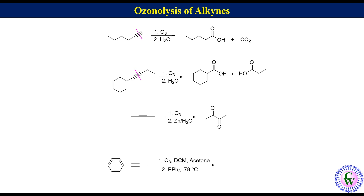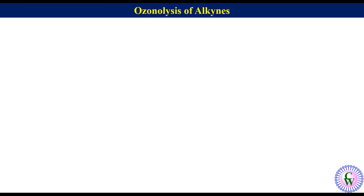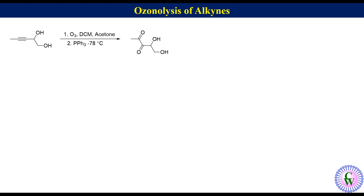Another example also involving reductive workup, since triphenylphosphine has been used. To get the product structure, convert the triple bond to a single bond to get the skeleton, and then connect the alkyne carbons with oxygen atoms through double bonds. Thus the product is 1-phenylpropane-1,2-dione. The presence of hydroxy groups in the reactant doesn't affect the outcome of the reaction. For example, a molecule with two hydroxy groups and an alkyne, when subjected to ozonolysis involving reductive workup using triphenylphosphine, produces 4,5-dihydroxypentane-2,3-dione.